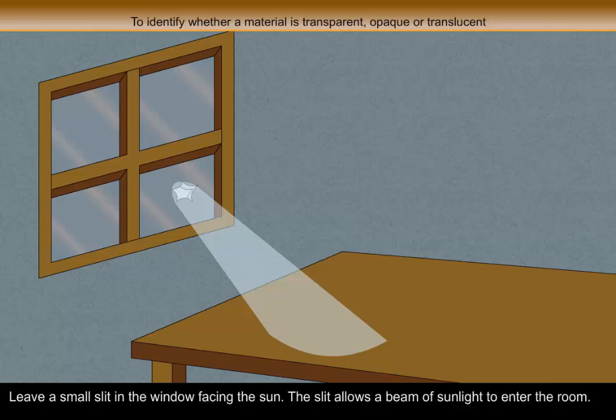Leave a small slit in the window facing the sun. The slit allows a beam of sunlight to enter the room.